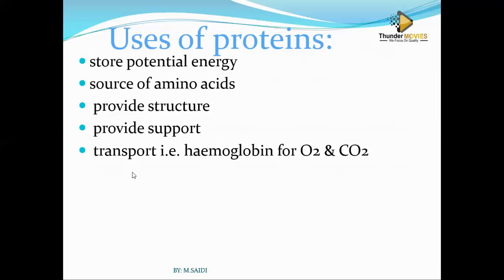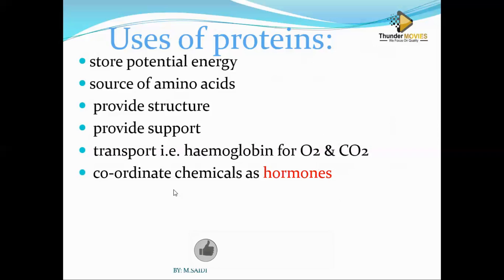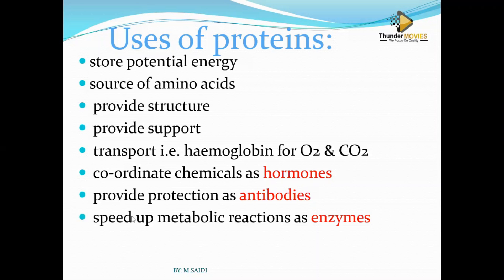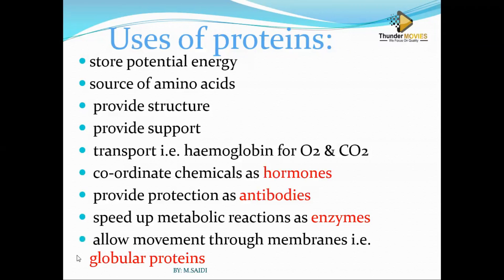Proteins can be used as transport means. Hormones are examples of proteins — they are organic chemicals very important in bringing about changes in the body and in plants. They can bring about growth, production of milk, and changes in appearance. Proteins also provide protection — they have a very important role in protecting us from diseases. When proteins speed up chemical reactions, those are enzymes. Lastly, globular proteins allow movement through membranes by transporting substances across the membrane.